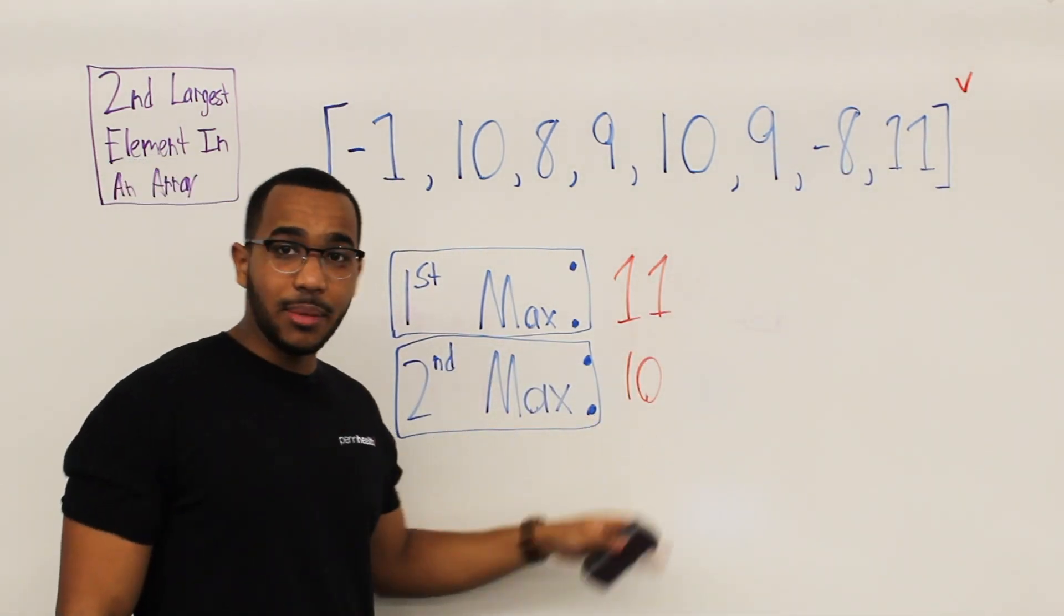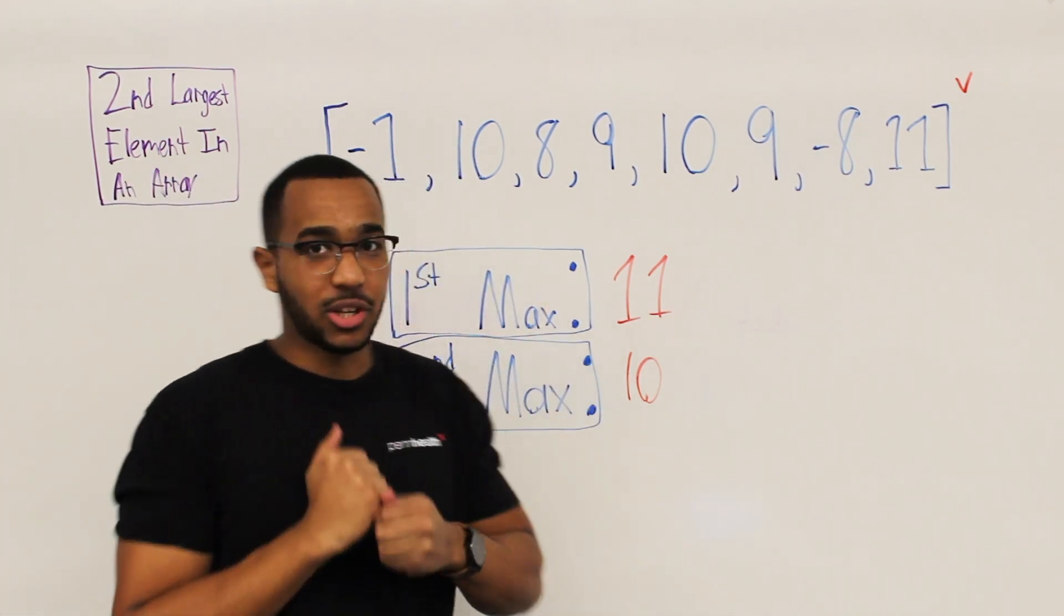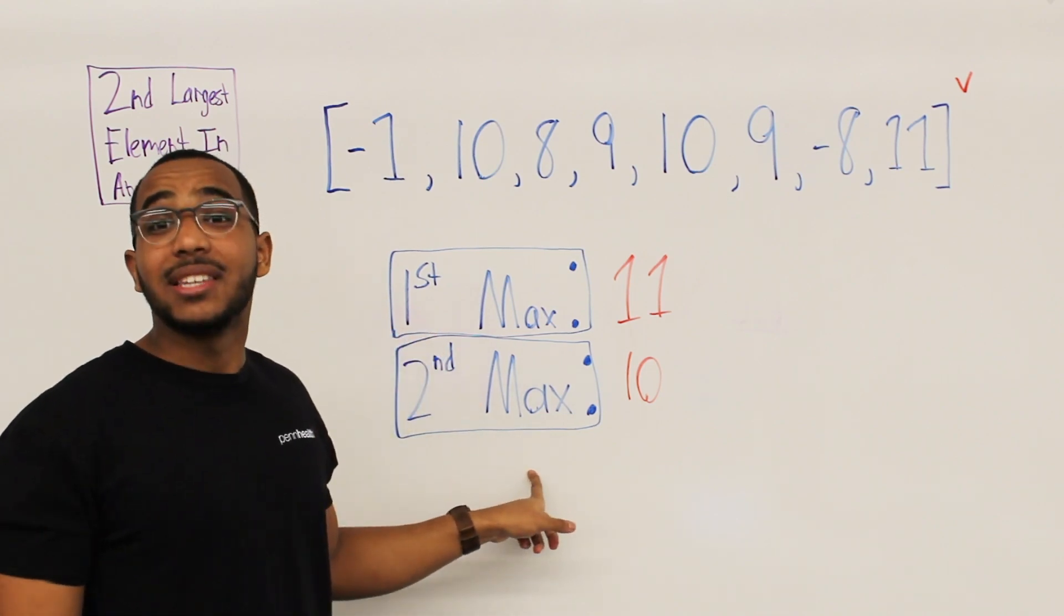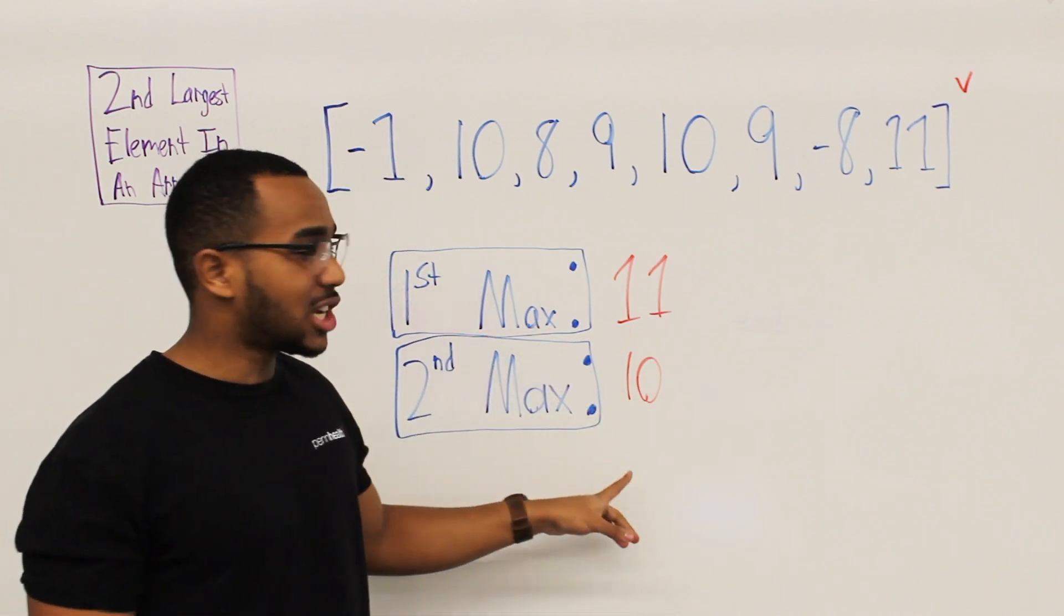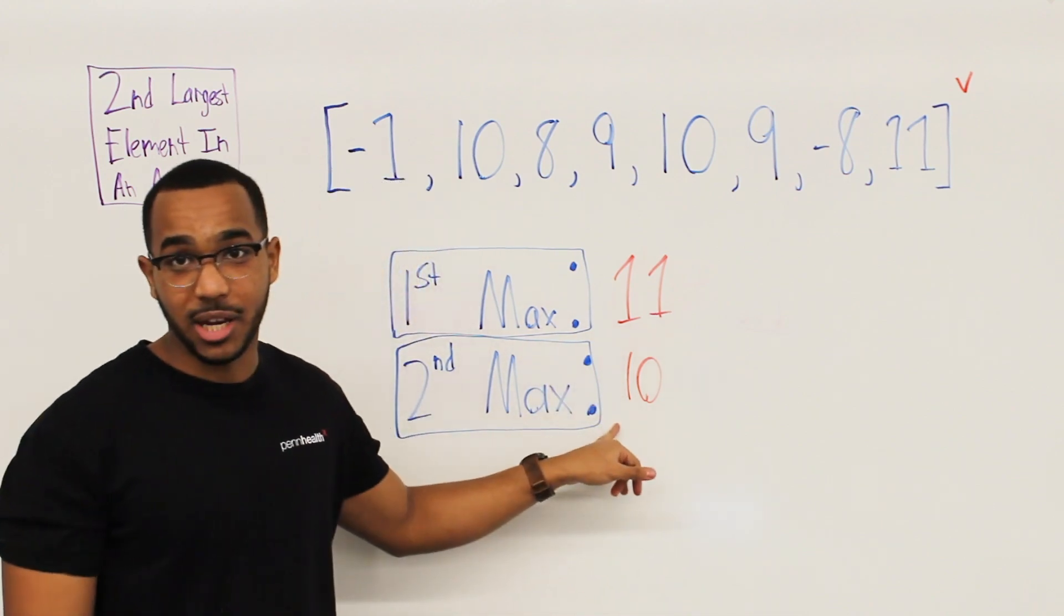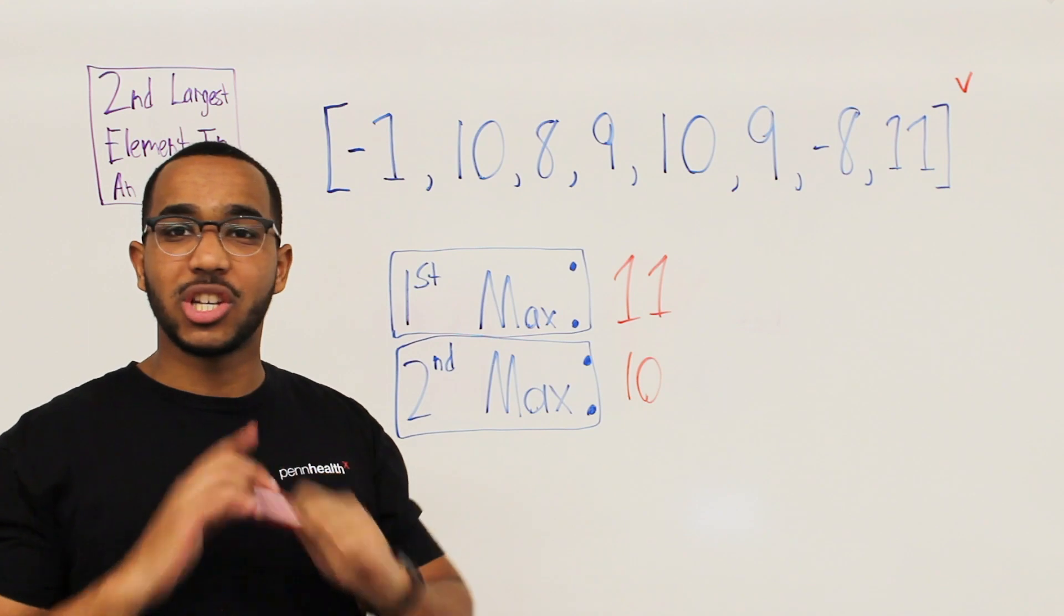So our second max item is going to be 10. So the gist of this problem is all we do is one comparison. We see, do I beat the first max? No. Do I beat the second max? Yes. I need to adjust the second max only if the item that just beat my second max is not the first max. So I do not lose track of an item here by pushing it out accidentally. That is the crux of this problem. That is the gist of it.